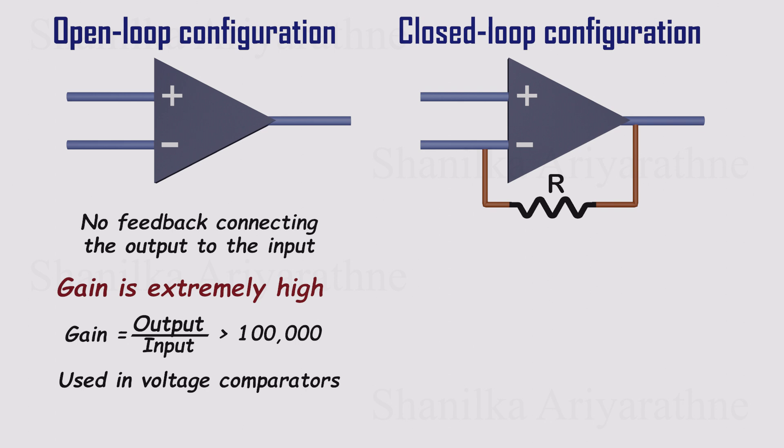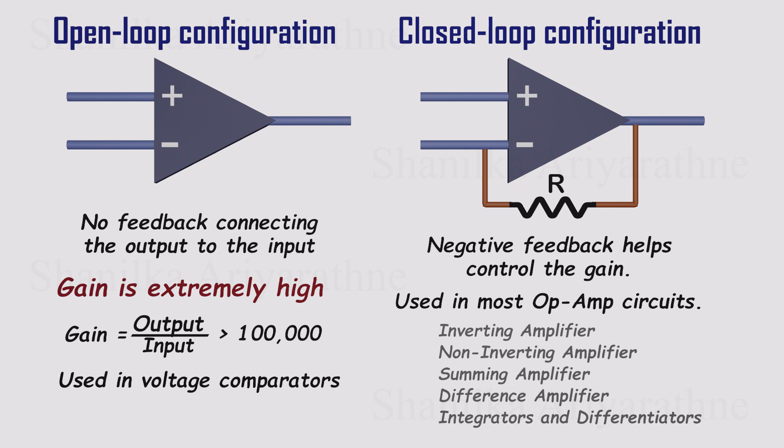Most real circuits use closed loop with negative feedback through resistors. This feedback tames the huge gain, keeps things stable, and makes the op amp behave in a nice, linear way. Closed loop designs are the backbone of op amp circuits.